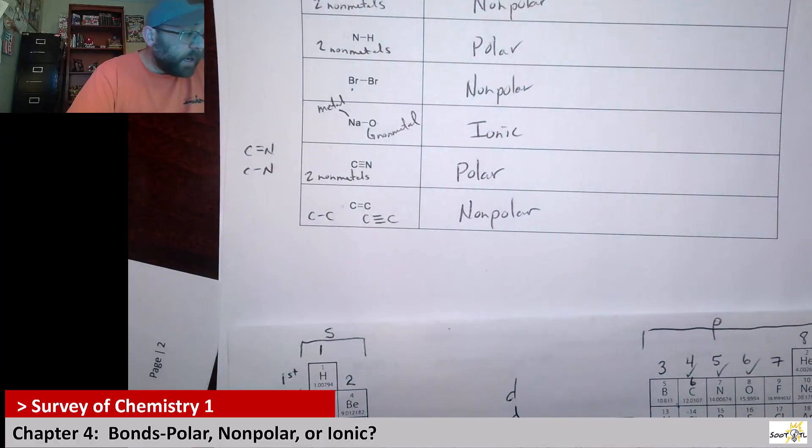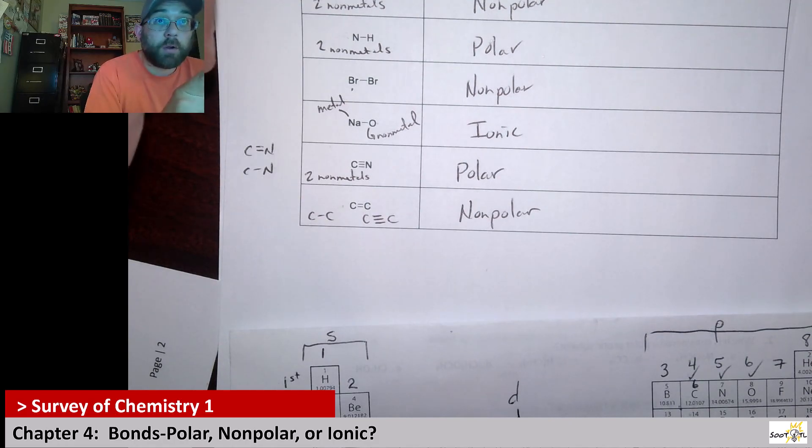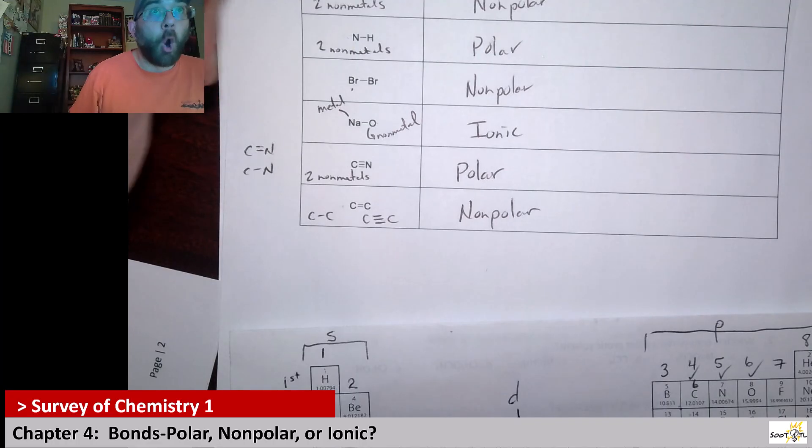Hopefully this kind of helps you weed through what's polar, what's nonpolar. Polar and nonpolar you see between two nonmetals. Ionic is when you got a metal and a nonmetal. And then you have to kind of remember, how do we tell the difference between nonpolar and polar? The easiest way is it's definitely nonpolar if it's two of the same thing. If it's two different things, specifically a carbon and a hydrogen, it's also nonpolar. Everything else, every other two different nonmetals bound together, is polar. Alright, bye.